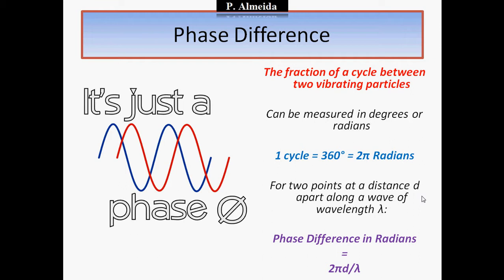So if I want to find the phase difference between any two vibrating particles — say one in the blue wave and one in the red wave — the phase difference in radians is 2π times d, the distance between the two particles, divided by the wavelength. So I do 2π times the distance over the wavelength. The formula is a direct representation of the definition: the fraction of a cycle between two particles. To convert to degrees, use the fact that 2π radians equals 360 degrees.